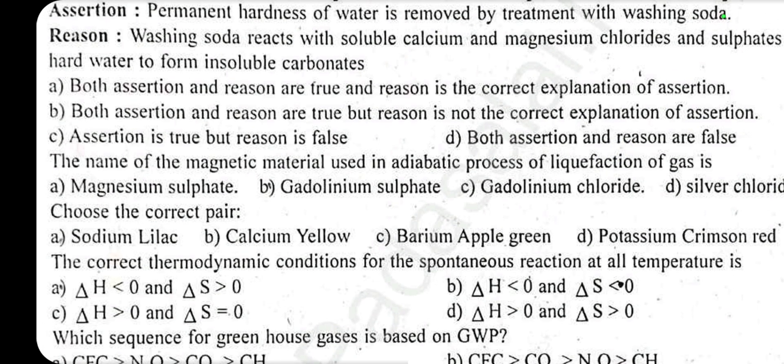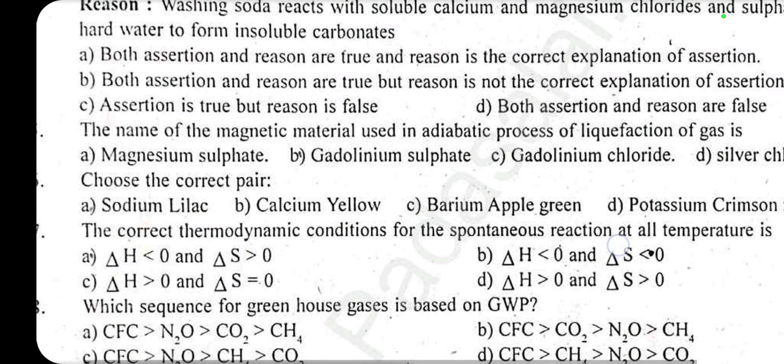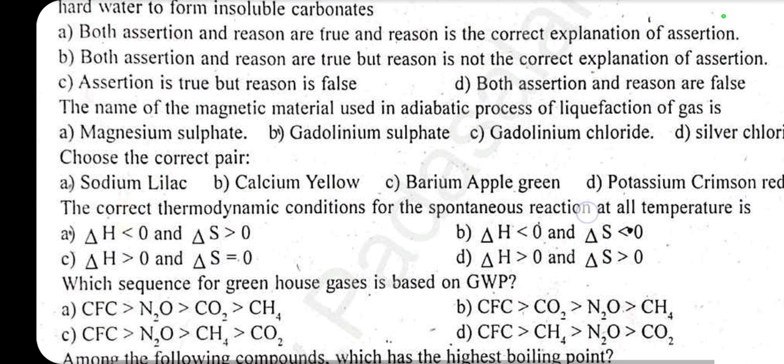The next question: name the magnetic material used in the adiabatic process of liquefaction of gases. Answer: Gadolinium sulfate. This is from lesson 6 on the adiabatic process. Next: choose the correct pair.